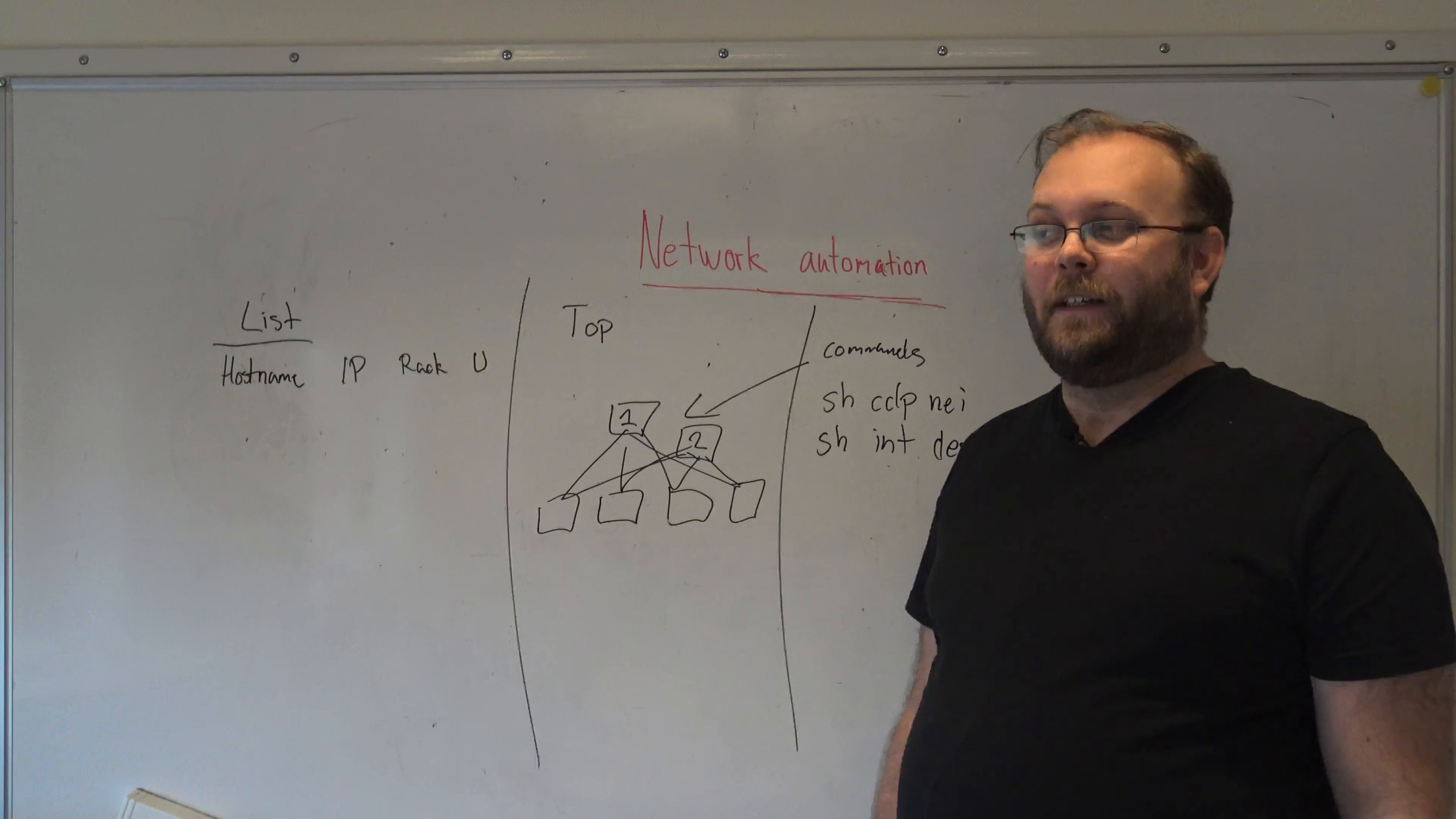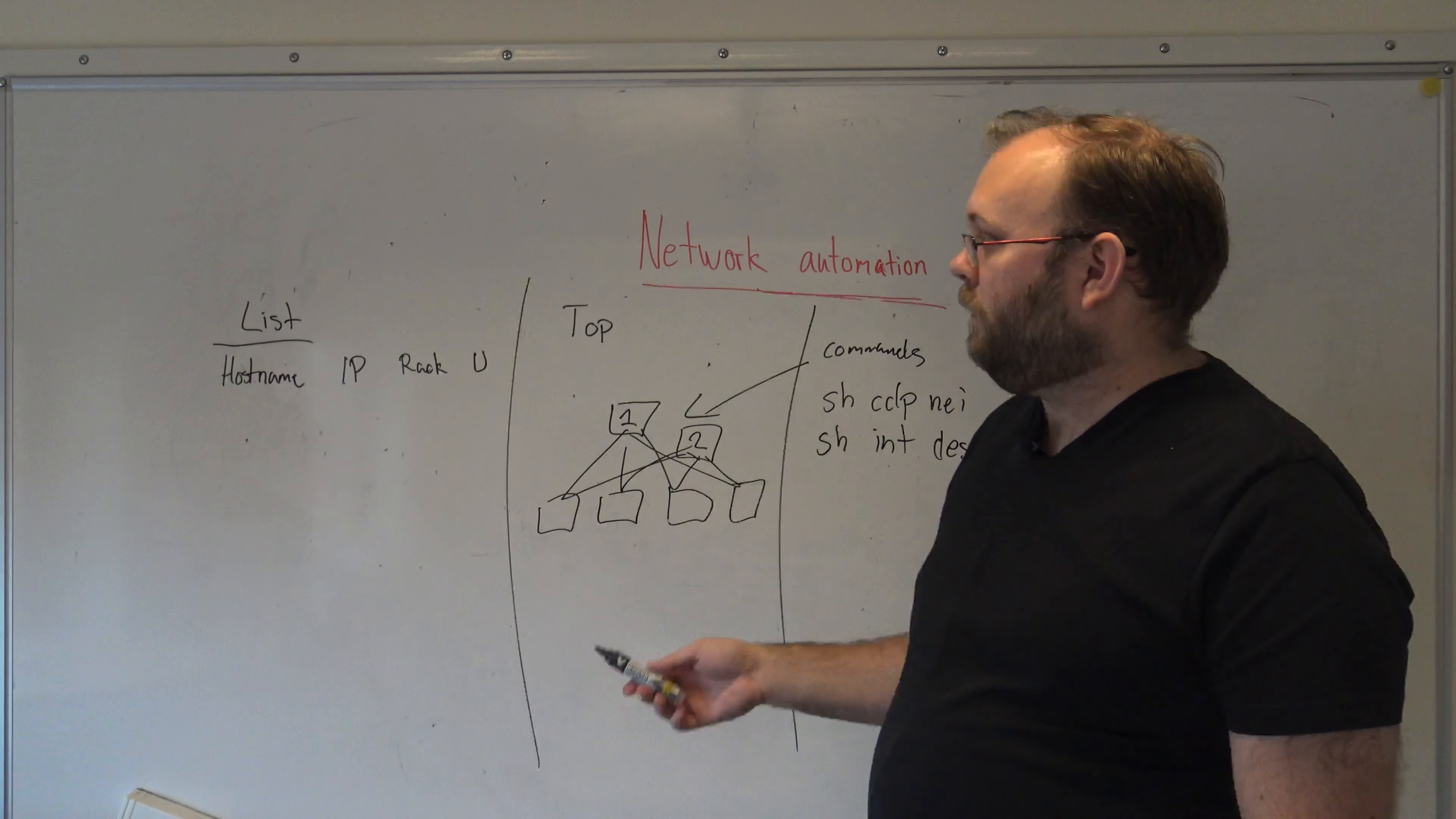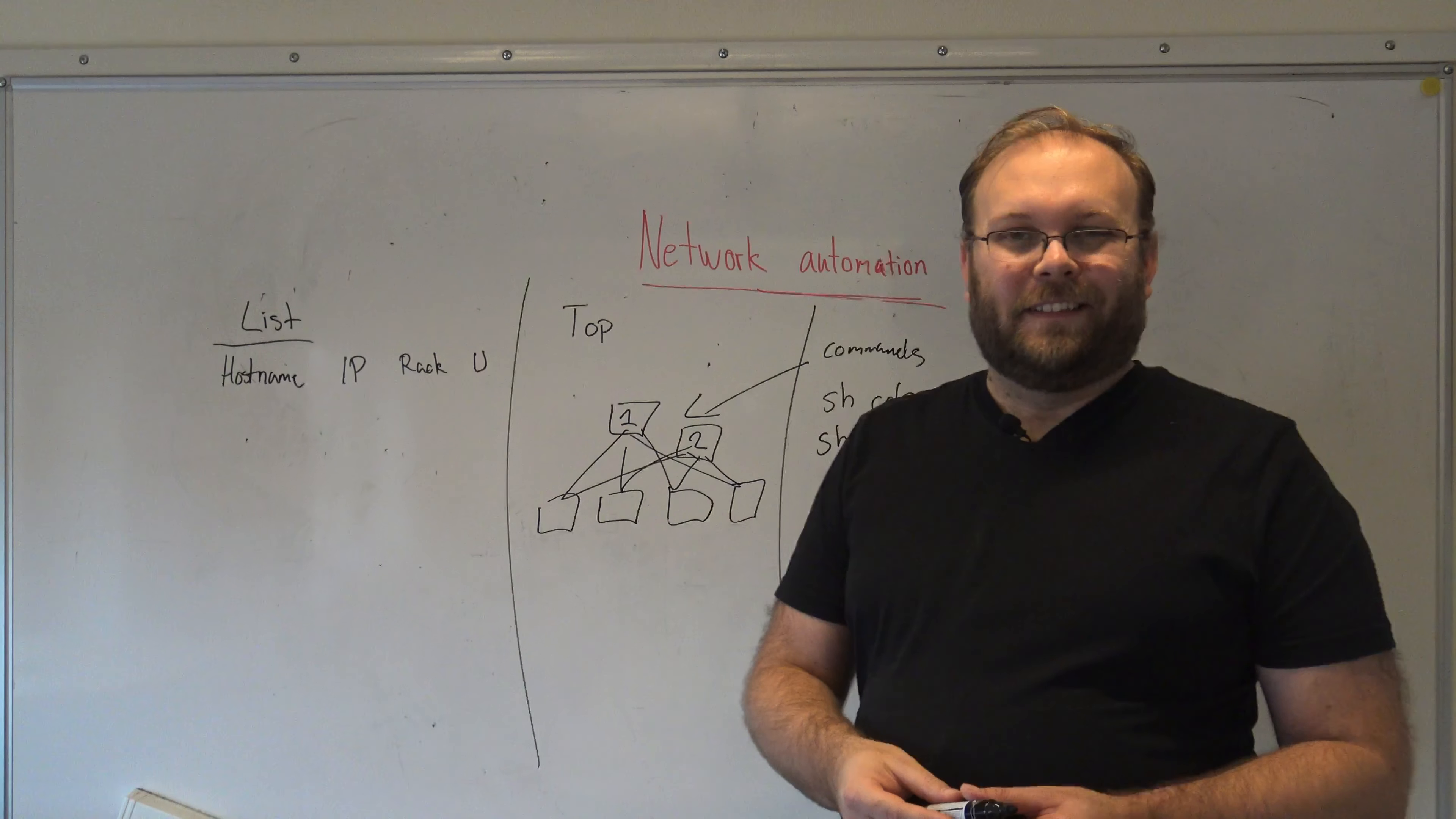So I have one production network and then I have one management network or out of band management. Maybe you have a fiber channel network. So within the same site you have multiple topologies for multiple purposes. And if you're going to make network optimization this list needs to be bigger, needs to be more accurate, needs to contain more information and you start to need a system.